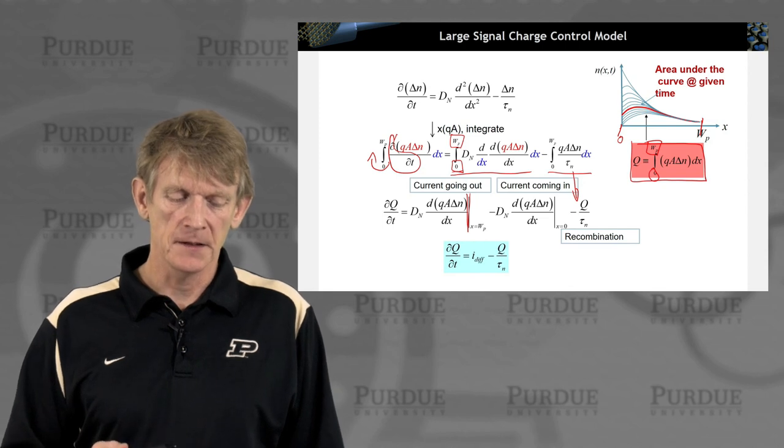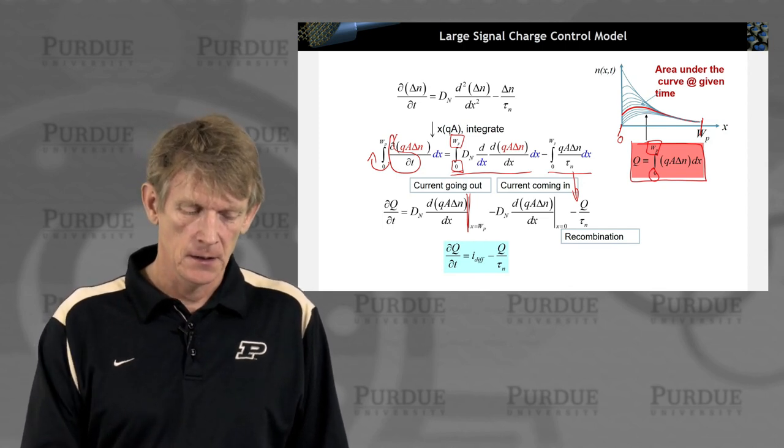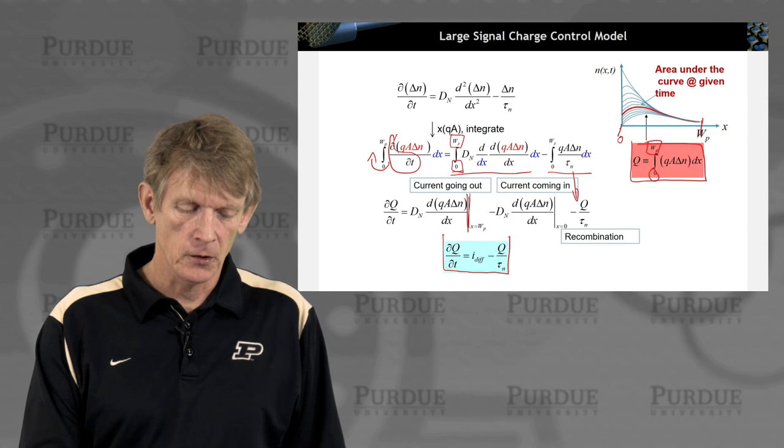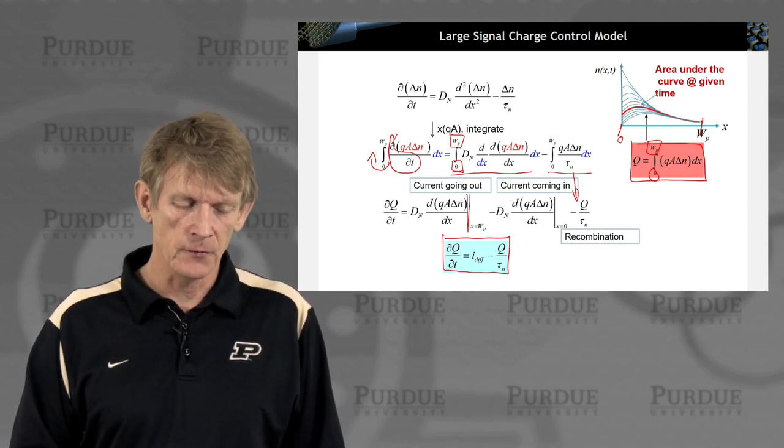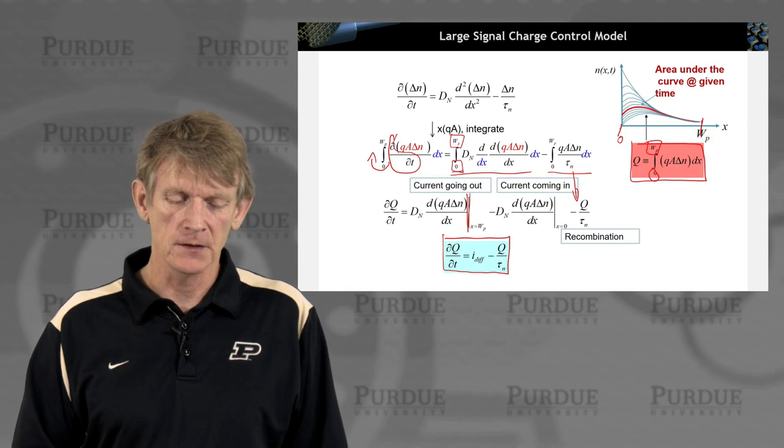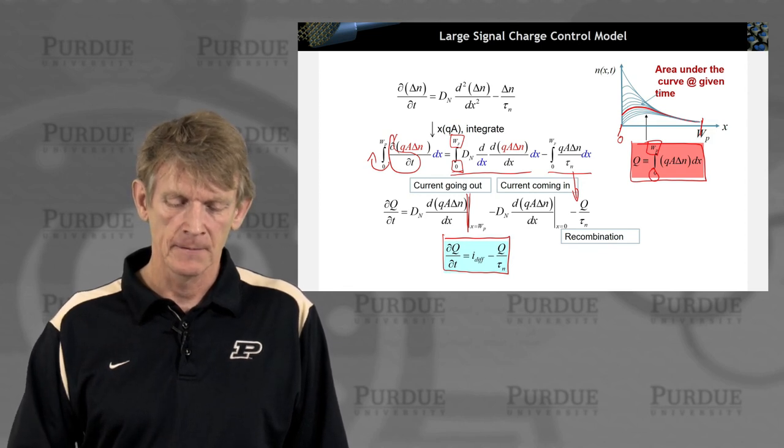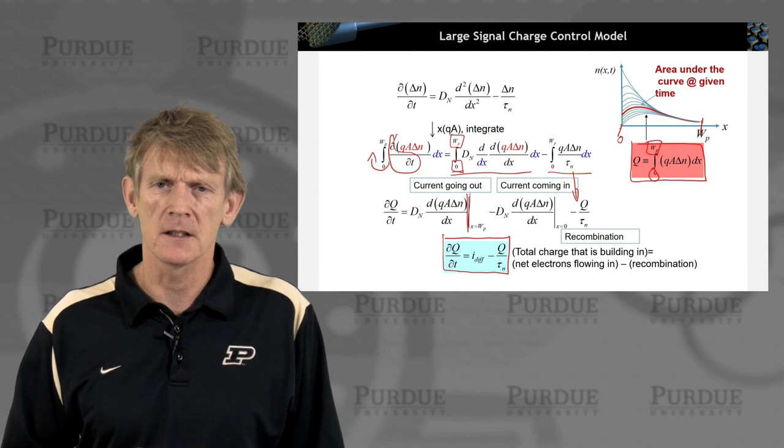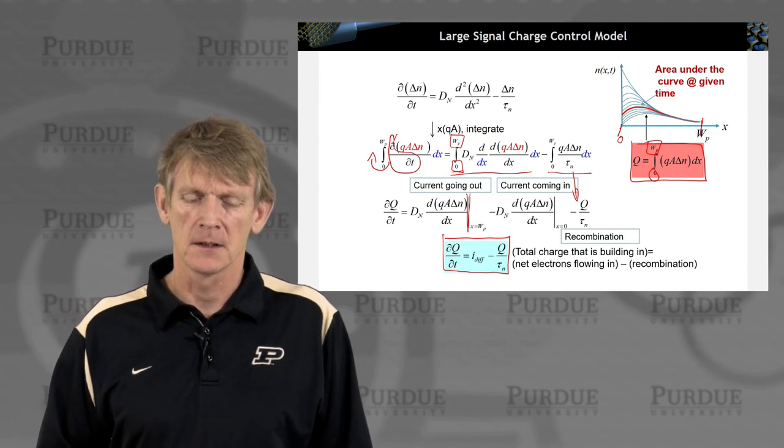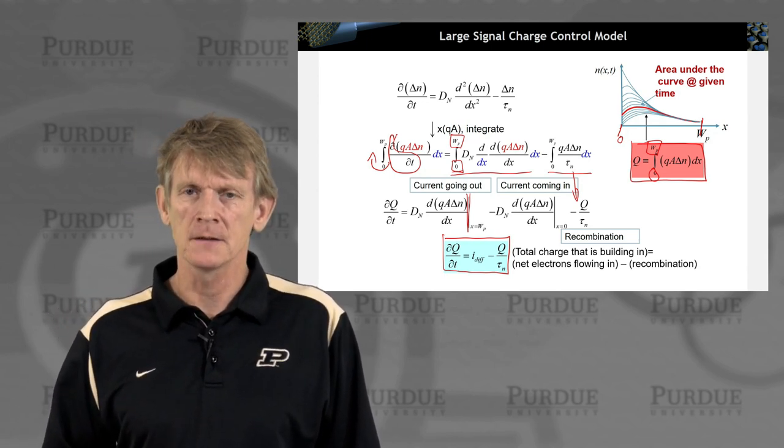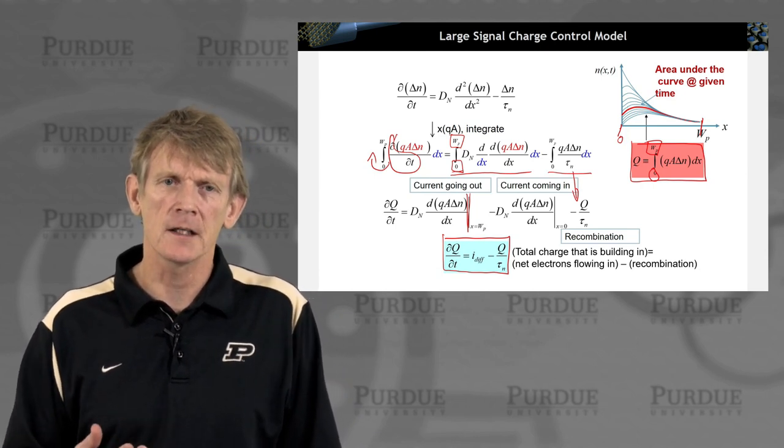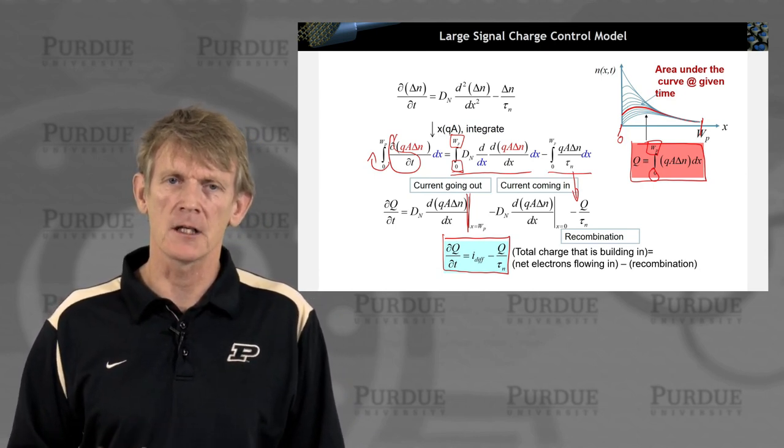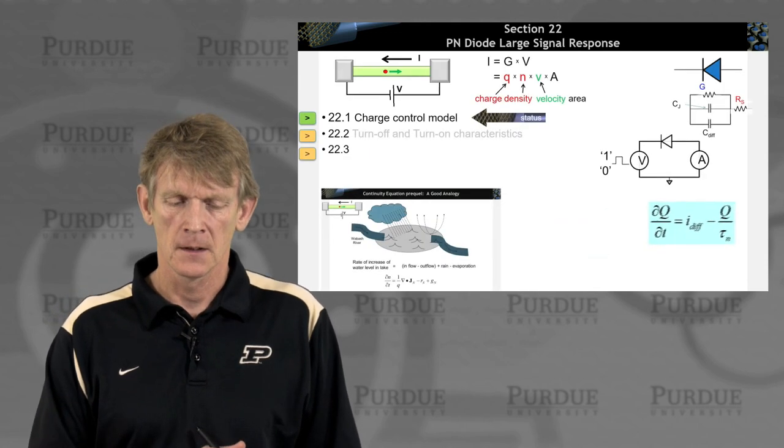So we can identify this expression now as in a form like this, where we look at the total charge as a function of time, as the difference current of current going into the system, going out, and of a relaxation time. So the total charge that is building in the system is the net electrons flowing in minus the recombination. It's again a rate expression for the overall charge in the system.